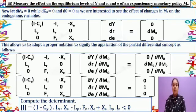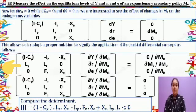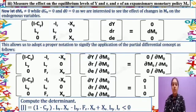This allows us to adopt proper notation to signify the application of the partial differential concept. The matrix equation becomes: the coefficient matrix with entries 1 minus C subscript Y, L subscript Y, 0, negative I subscript R, L subscript R, F subscript R, negative X subscript E, 0, X subscript E, multiplied by the partial derivatives of Y, R, and E with respect to M subscript 0, equals 0 by dM0, dM0 by dM0, and 0 by dM0, giving the vector bracket 0, 1, 0.